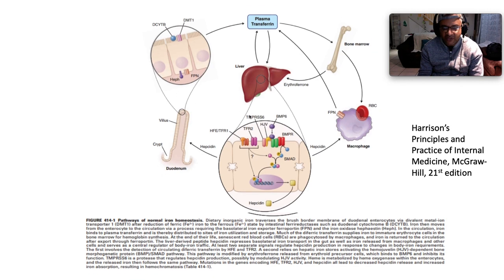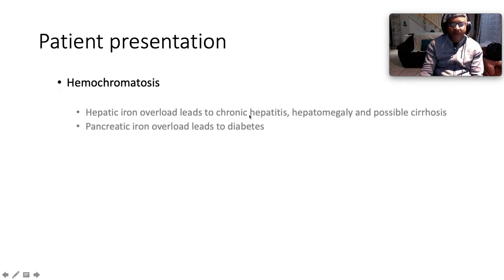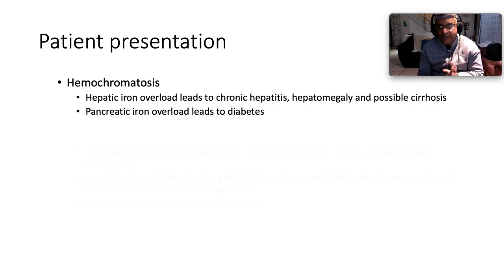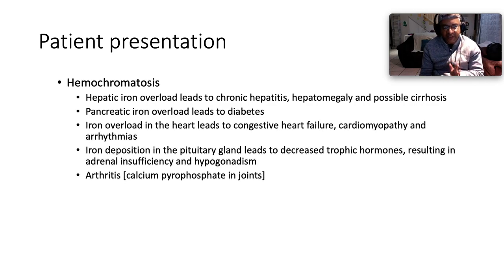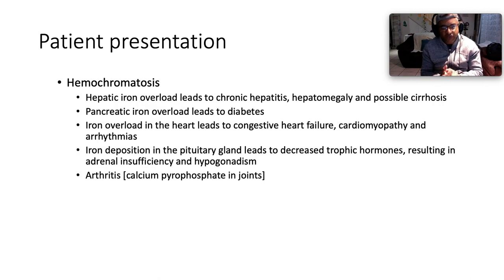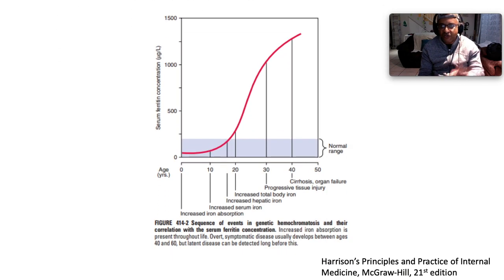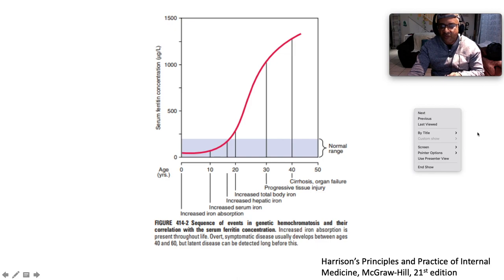Patients with hemochromatosis present with: hepatic iron overload leading to chronic hepatitis and eventually cirrhosis; pancreatic iron overload leading to diabetes — so-called bronze diabetes; iron overload in the heart leading to congestive heart failure, cardiomyopathy, and arrhythmias; iron deposition in the pituitary gland leading to decreased trophic hormones, resulting in adrenal insufficiency and hypogonadism; and arthritis due to calcium pyrophosphate deposits in the joints, typically the second and third metacarpophalangeal joints, giving so-called hook-like osteophytes.